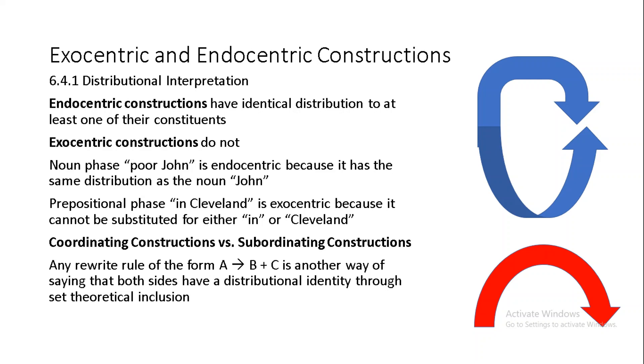Among the endocentric constructions themselves, coordinating constructions have the same distribution as each of their constituents taken separately, while subordinate constructions have the same distribution as just one of their constituents. For example, in the noun phrase poor John, the noun John is considered the head because its distribution is formally the same, while the adjective poor is considered the modifier because its own distribution as an adjective is not identical to that of the whole noun phrase. Modifiers, then, can be recursively stacked up on top of one another with no theoretical limit on how many. For example, there's nothing to stop you from saying poor old ugly incompetent lazy self-pitying John. Despite the fact that there are six times more modifiers in this phrase, John, as the noun, is still the head because it is a noun phrase.